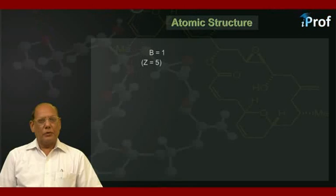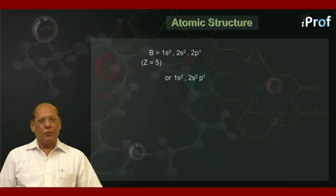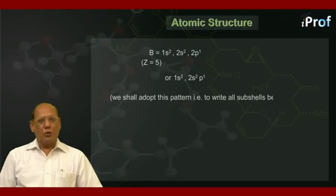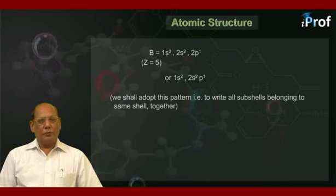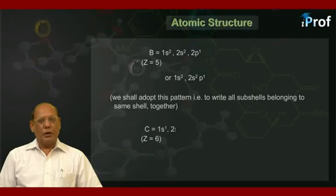Then boron, Z equal to 5, with the configuration 1s² 2s² 2p¹. Or we may write it as 1s² 2s²p¹. We shall adopt this pattern, that is, to write all subshells belonging to same shell together. Therefore, for carbon, Z equal to 6, the configuration becomes 1s² 2s²p².